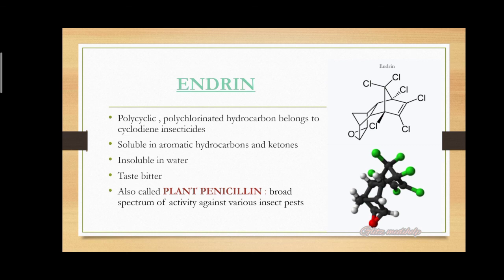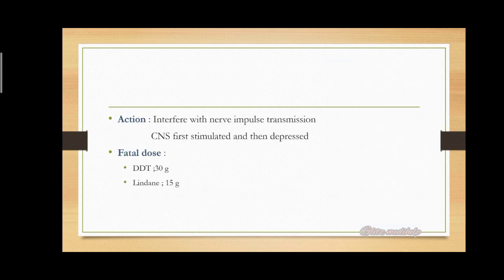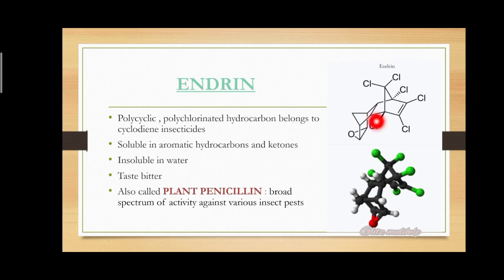Endrin is one of the organochlorins belonging to the cyclodiene group. It is a polycyclic and polychlorinated hydrocarbon that belongs to cyclodiene insecticides. It is soluble in aromatic hydrocarbons and ketones, sparingly soluble in alcohols, but not at all soluble in water, and its taste is bitter.